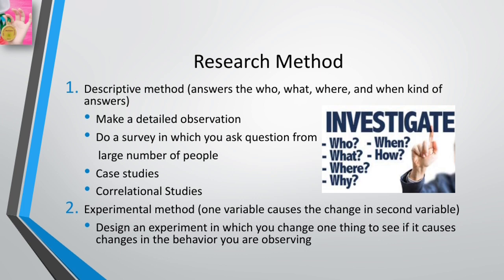Descriptive methods include naturalistic observations, surveys, case studies, and correlation studies. In contrast, the experimental method is used to show that one variable causes change in a second variable. In an experiment, the researcher deliberately varies one factor then measures changes produced in a second factor. Ideally, all experiment conditions are kept as constant as possible except for the factor the researcher systematically varies. If changes occur in the second factor, those changes can be attributed to the variations in the first factor.